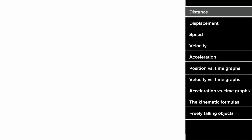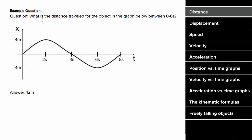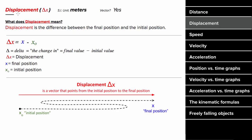What does an example problem for distance look like? Let's say you had this graph and the question was: what's the distance traveled for the object in the graph between zero and six seconds? Between zero and two seconds, the object moved forward four meters. Between two and four seconds, the object moved backward four meters. And between four and six seconds, the object moved backward another four meters, which means the total distance would be four plus four plus four, which gives you 12 meters.